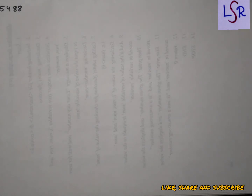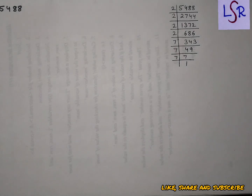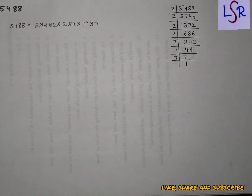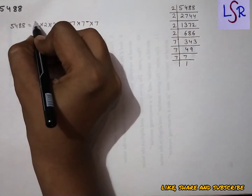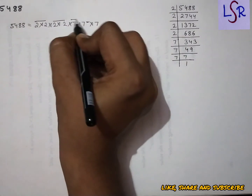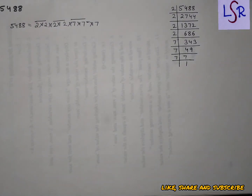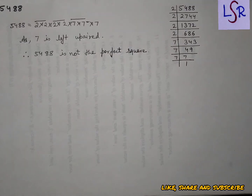Now let's see one more part. In the second part we have 5488. We find the prime factors of this number and write them in product form. On making pairs, we get pairs 1, 2, and 3, but 7 is left unpaired. Therefore 5488 is not a perfect square.